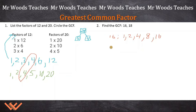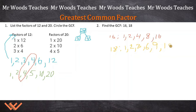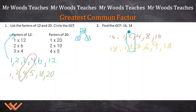For 18: 1 is a factor, 2, 3, 6, 9, and 18. The common factors between 16 and 18 are 1 and 2. The greatest common factor is 2, because there are no other numbers common in both factorizations for 16 and 18.